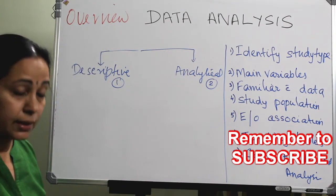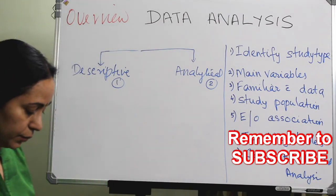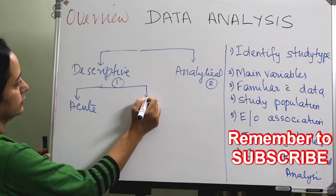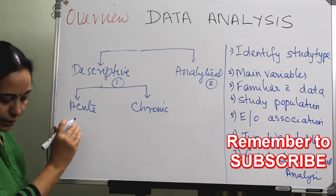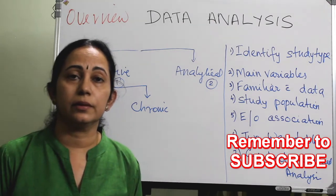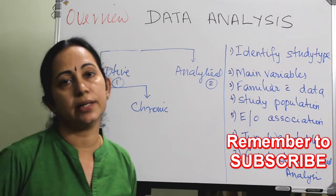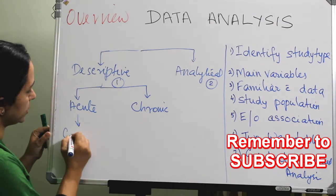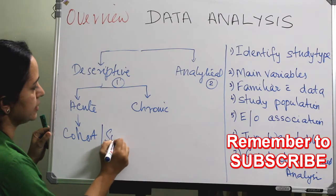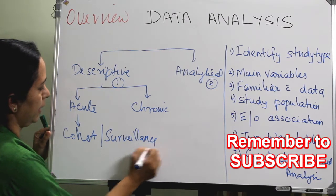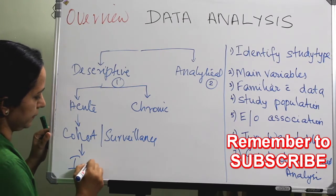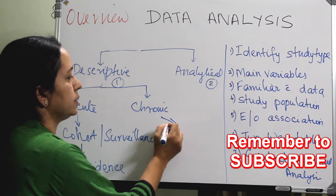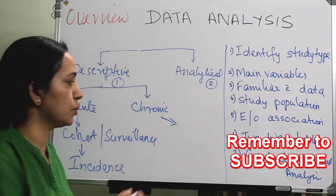If it is a descriptive study, think about the study outcome and whether you are going for an acute or a chronic condition. For acute — for example, studying the incidence of acute diarrheal disease in children — the study type is either a cohort study or a surveillance. For chronic disease in a descriptive analysis, it is always better to go with a cross-sectional survey.